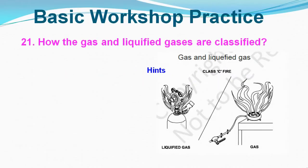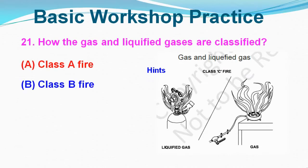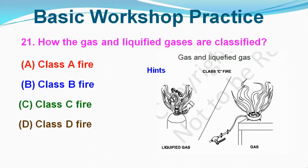Question No. 21: How are gas and liquefied gases classified? Option A: Class A Fire, Option B: Class B Fire, Option C: Class C Fire, Option D: Class D Fire. Correct answer is Option C, Class C Fire.